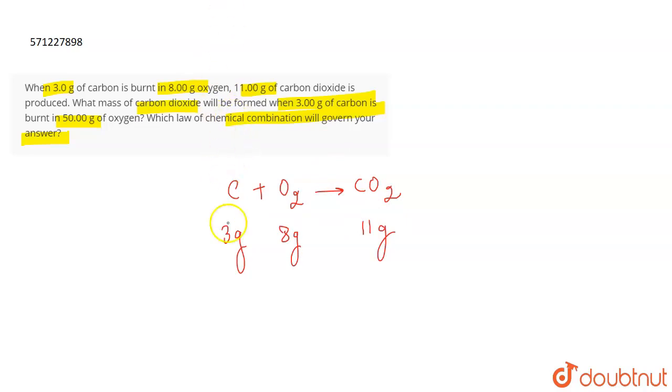But the question says that what happens when you are having 3 gram of carbon and 50 grams of oxygen, then how many grams of carbon dioxide is going to be formed? If you look into this question, in the first case, as you can see that 3 grams of carbon is combining with 8 grams of oxygen and leading to the formation of 11 grams.